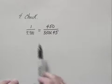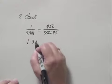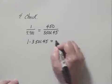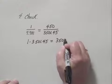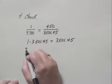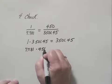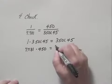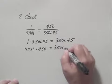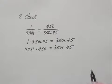Let's check the cross products. 1 times 3,501.45 is 3,501.45. And 7.781 times 450 is also 3,501.45. The cross products are the same, so the answer checks.